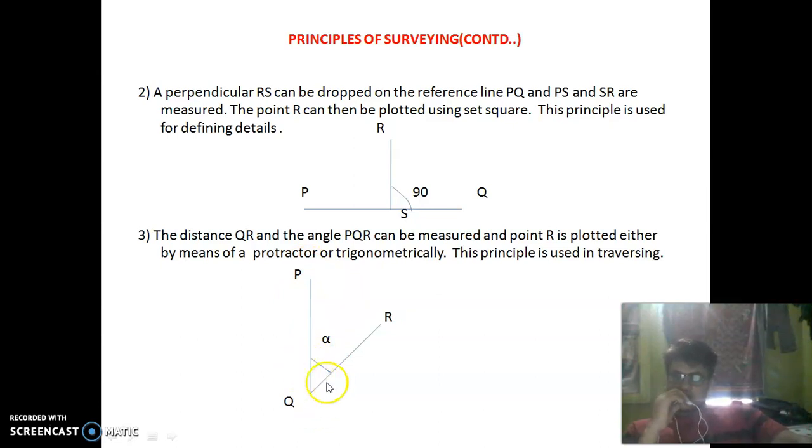On the reference line P and Q are the reference points. Alpha angle is measured along the line and QR distance is measured to locate point R.